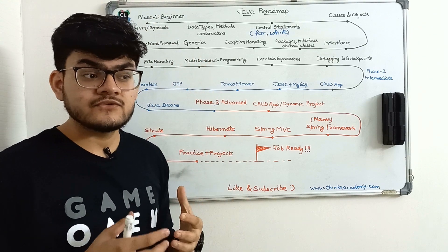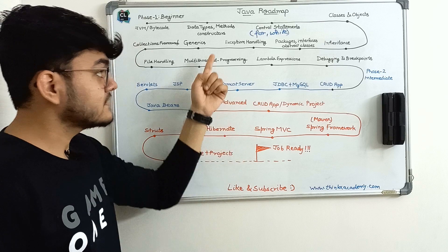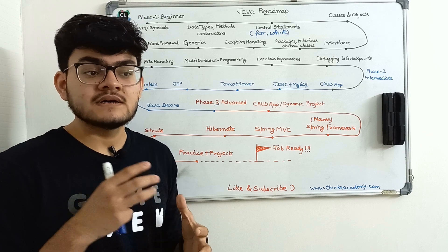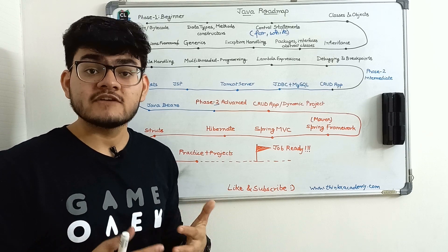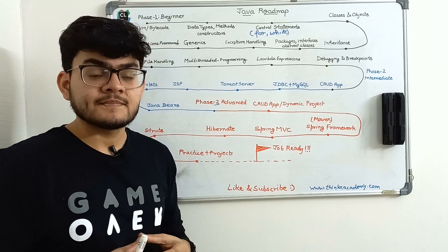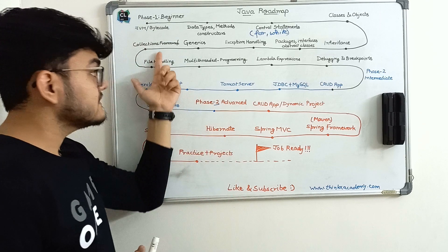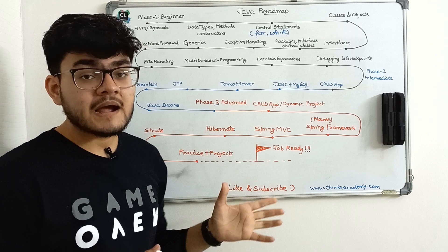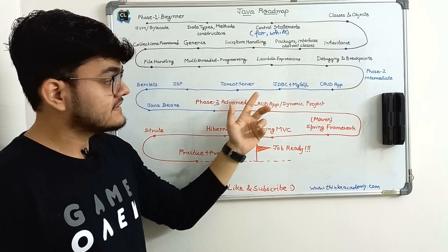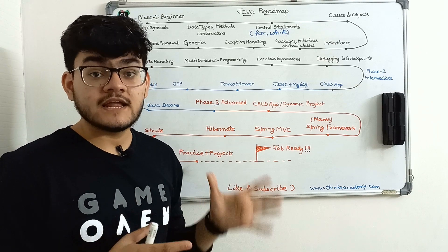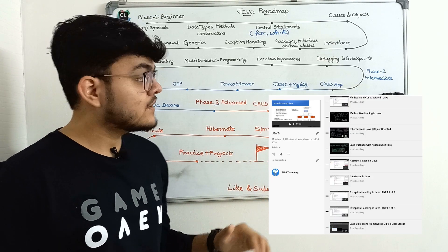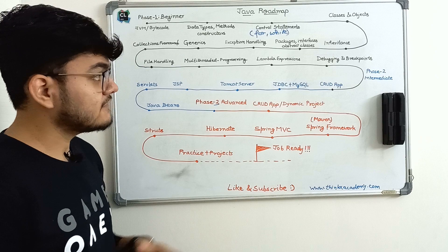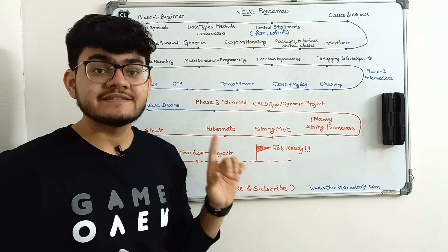Next comes generics. You should know how to implement generic classes because this is important for the collections framework. The collections framework is a Java framework which helps implement data structures like linked lists, queues easily. For that, you must have knowledge of generics, so you will have to follow this roadmap in the right order. I've already created a Java playlist — I will give the link to that playlist in the description of this video. In that playlist, I have given all the videos in the right sequential order, and you will have to follow them in the same order.